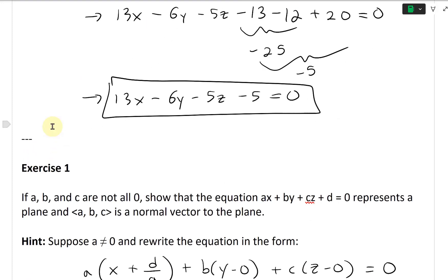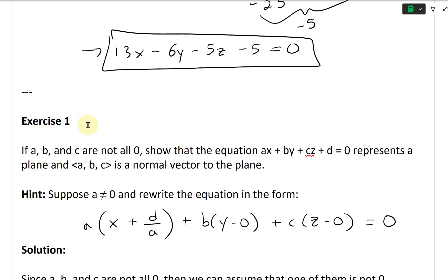All right, now let's take a look at Exercise 1. If a, b, and c are not all zero, show that the equation ax + by + cz + d = 0 represents a plane and <a, b, c> is a normal vector to the plane.